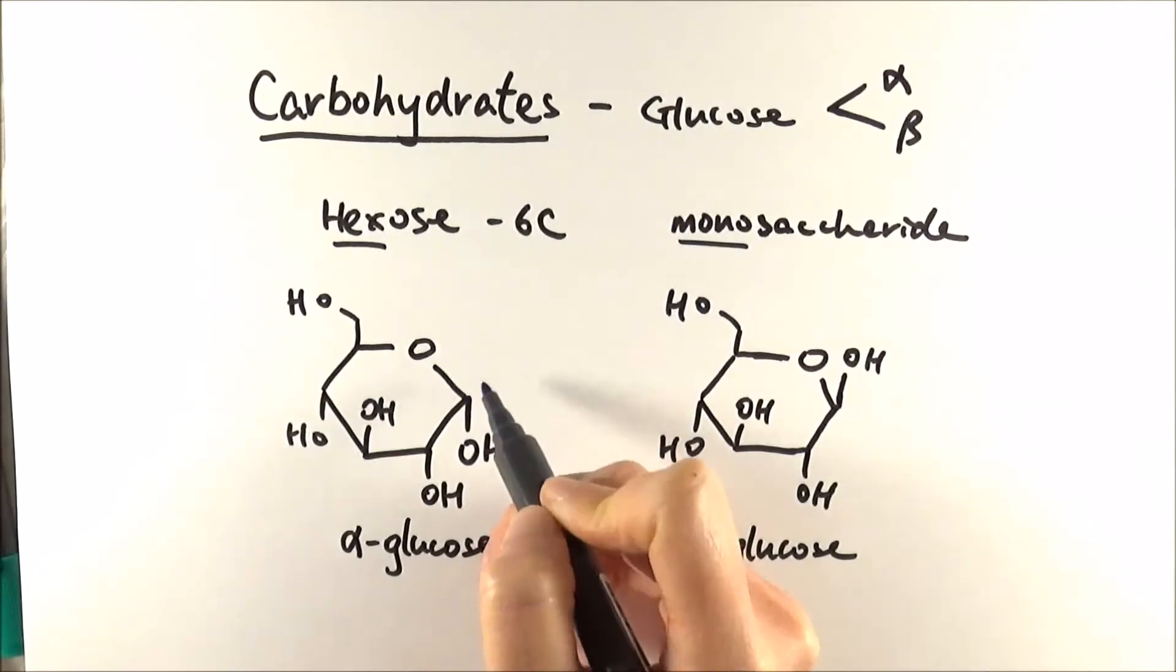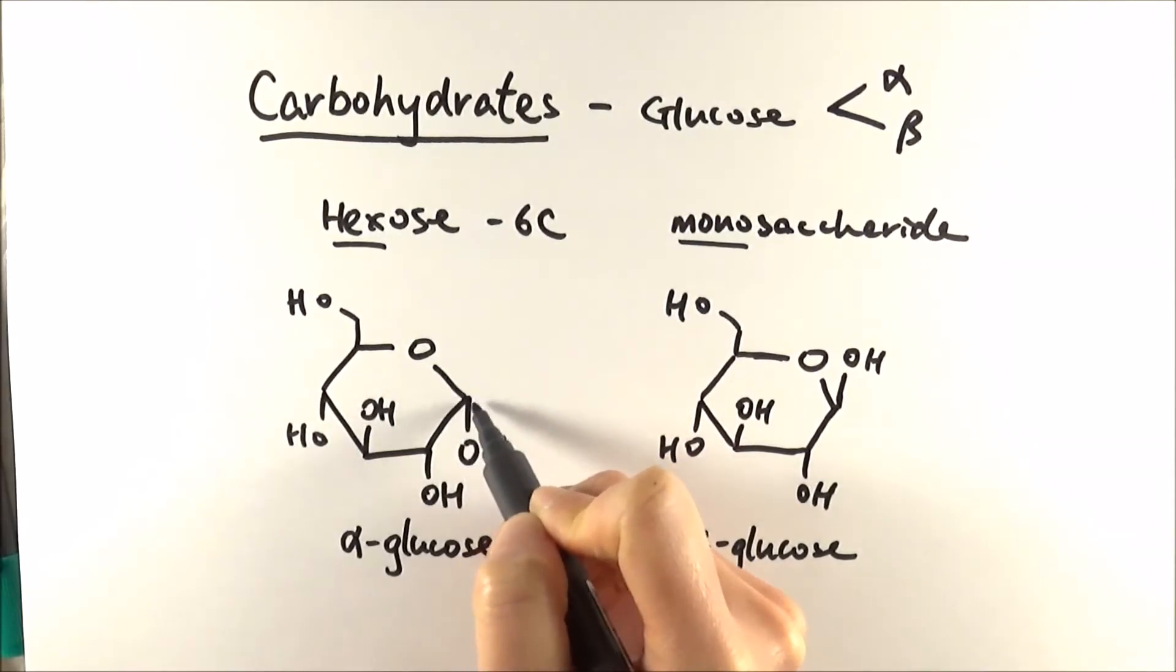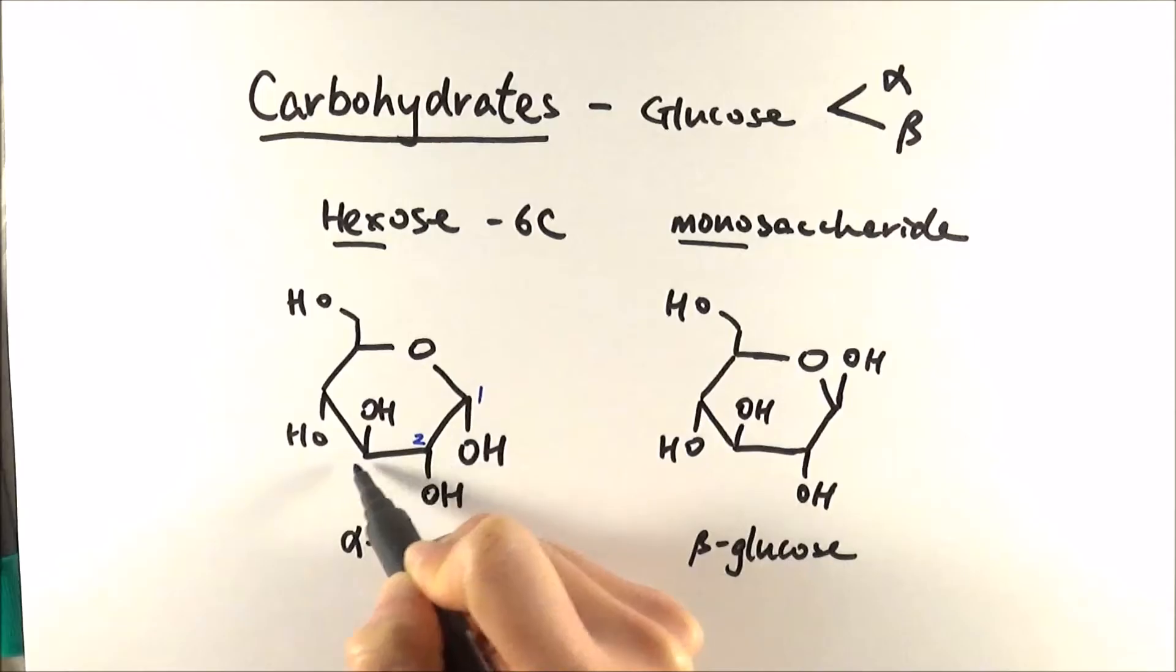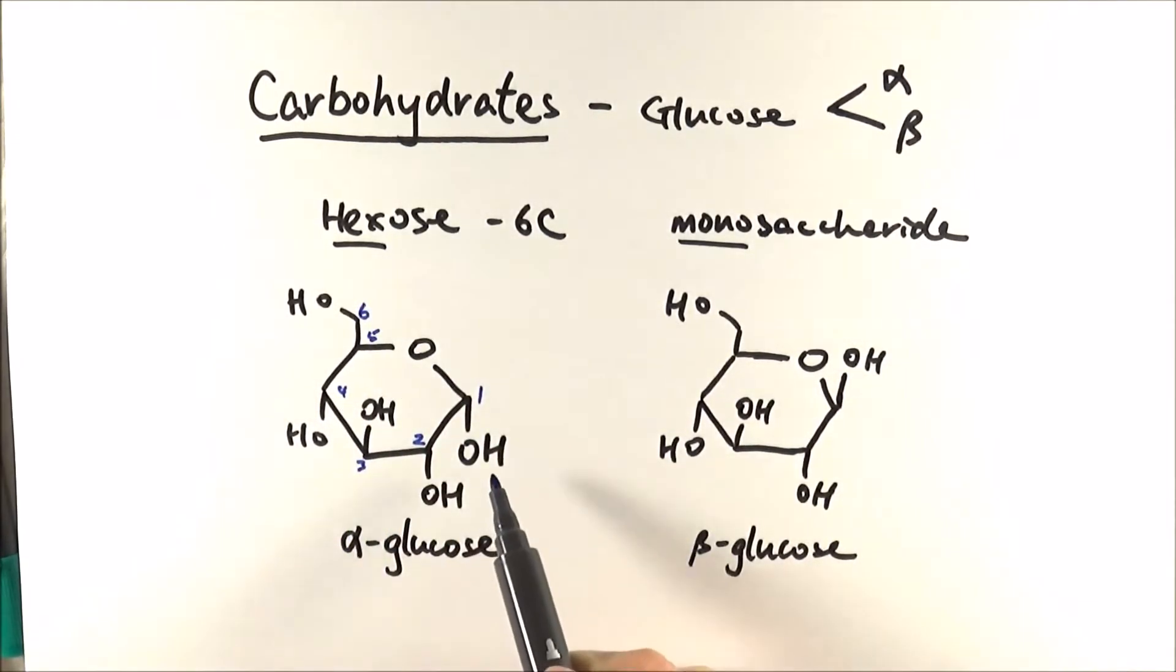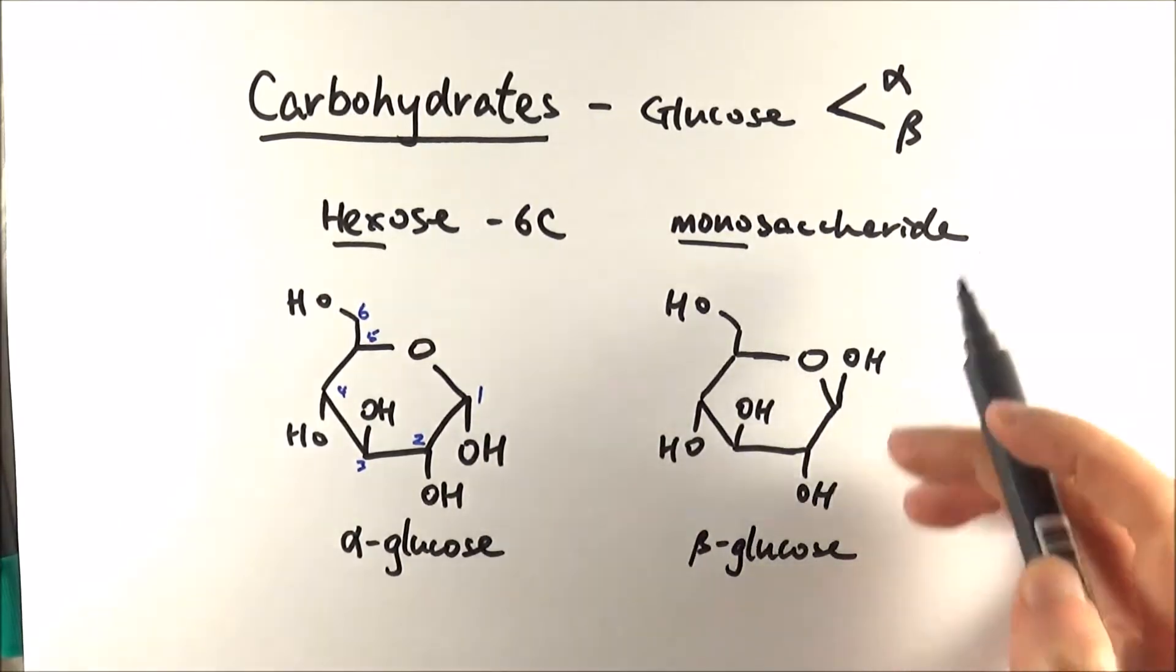So if we think about the molecule as this is carbon one and this is carbon two, three, four, five and six, the hydroxyl on the C1 carbon is below the ring, whereas in the beta glucose it's above the ring.